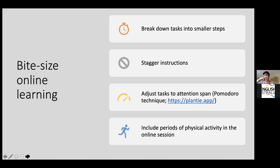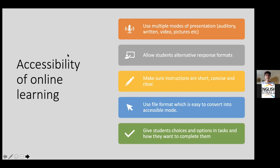There are techniques students can use to train their attention, like the Pomodoro technique — the kitchen timer that looks like a tomato. You set it and say: I'm going to learn these words for 10 minutes, then after 10 minutes I'll have a five-minute break, reward myself, then start again. There are also focus apps. And if possible, include periods of physical activity in the online session — tell students to walk to the window, look outside, and type in the chat what they can see.